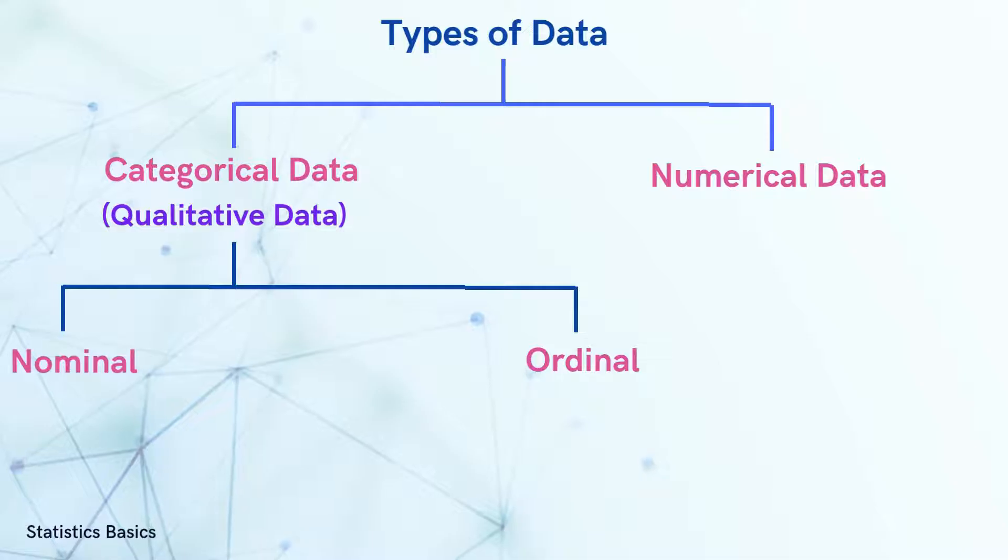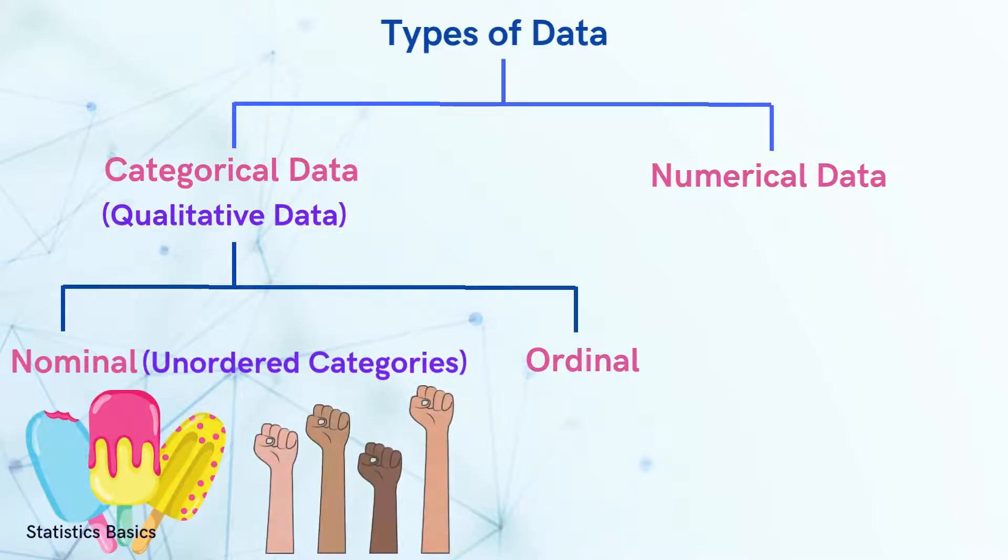nominal and ordinal data. For nominal data, there is no natural order or ranking. For instance, one's favorite ice cream flavor or ethnicity has no meaningful order or sequence.